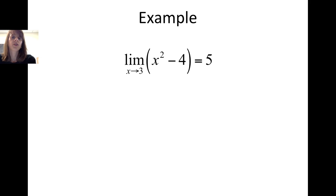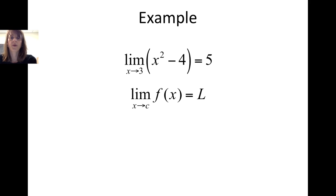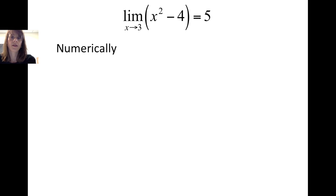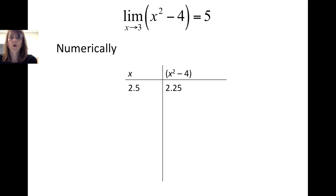Let's consider a couple of examples. First, let's look at the limit of x squared minus 4 as x approaches 3, and see how we can demonstrate that that limit is equal to 5. Using the notation from the previous page, the function f of x is x squared minus 4. We're looking at what happens to x squared minus 4 as x is close to 3, which is our c value, and we're going to see that the limit is equal to 5.